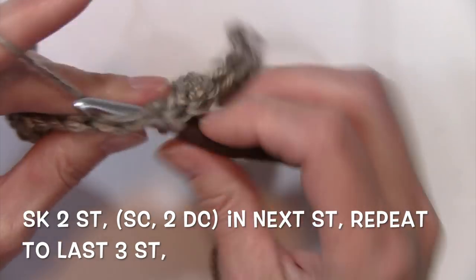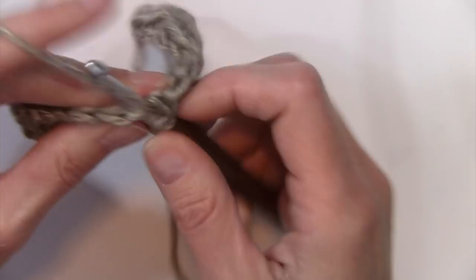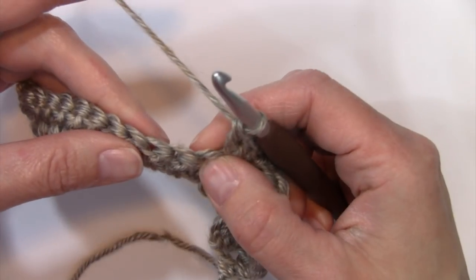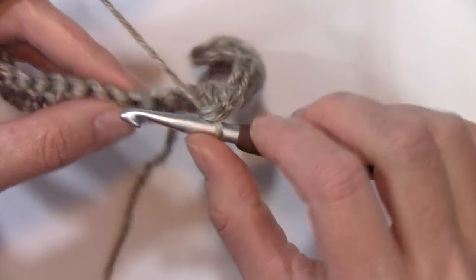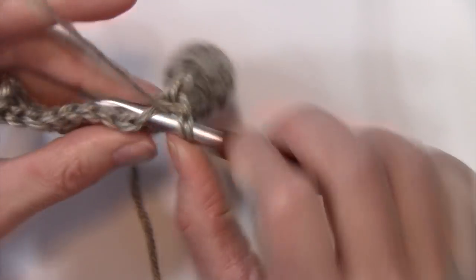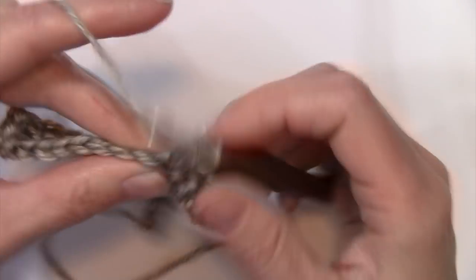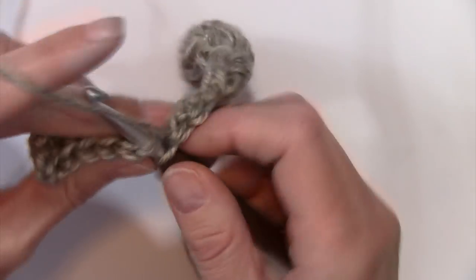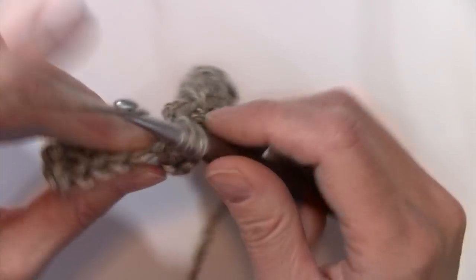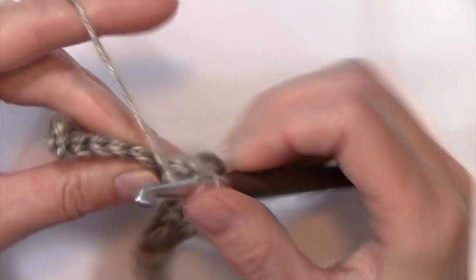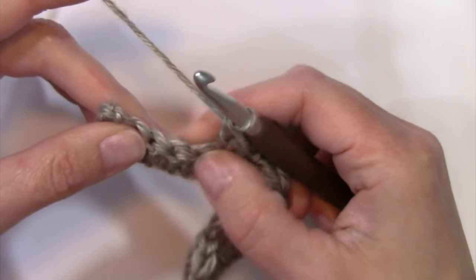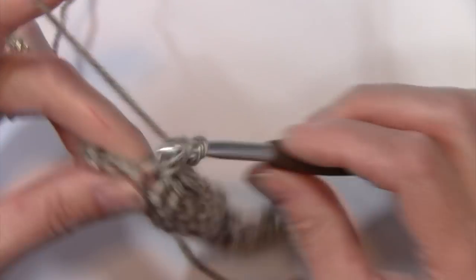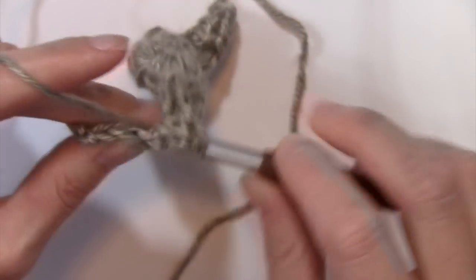Skip two, single crochet in the next, and two double crochets in that same stitch. Skip two, work a single crochet and two double crochets in the next, and repeat that stitch sequence down the row. Skip two, single crochet in the next, skip two, single crochet and two double crochets, double crochets in the next.